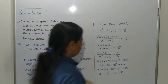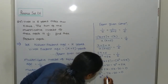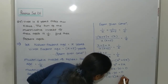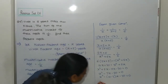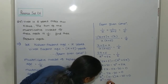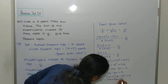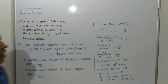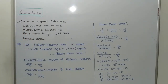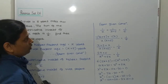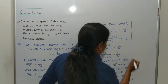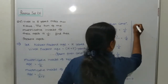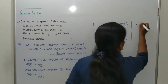So factorize: x squared minus 10x plus 3x minus 30 equals 0. That is x squared minus 10x plus 3x minus 3 into 10 equals 0. Put x common: x(x minus 10).